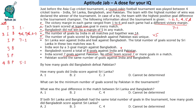Sri Lanka won against India and lost against Bangladesh. The total number of goals scored by Sri Lanka in these two matches was 4. So Bangladesh wins the Sri Lanka vs Bangladesh match, and Sri Lanka wins against India. Since Sri Lanka is winning the India match, Sri Lanka can win 2-1 or 3-1, scoring either 2 or 1 goal against Bangladesh depending on the margin.